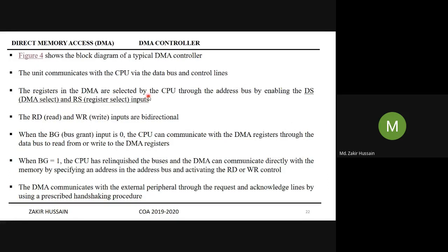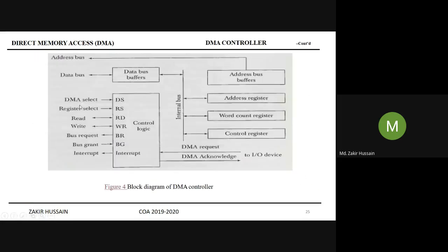The registers in the DMA are selected by the CPU through the address bus, by enabling DS — that is DMA select — and RS — that is register select. DS is the acronym for DMA select and RS is the acronym for register select. These two signals are coming into the control logic, which is how the CPU selects registers inside the DMA.